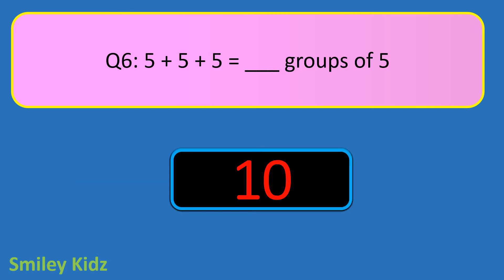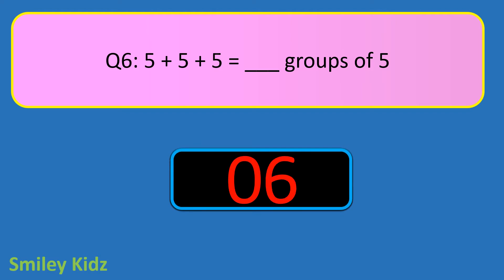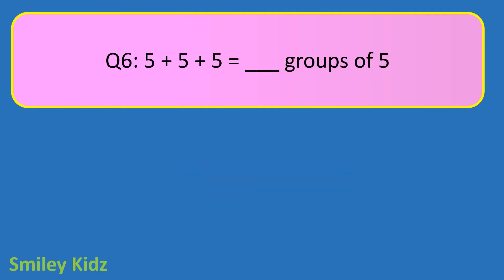Question number 6. 5 plus 5 plus 5 is equal to blank groups of 5. Your time starts now. And your time is up. The right answer is 3. 5 plus 5 plus 5 is equal to 3 groups of 5.